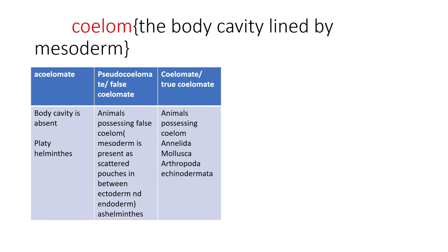The next classification character is the coelom. A coelom is a body cavity completely lined and protected by mesoderm. The true coelom is called eucoelom. Examples of coelomates include Annelida, Mollusca, Arthropoda, and Echinodermata.